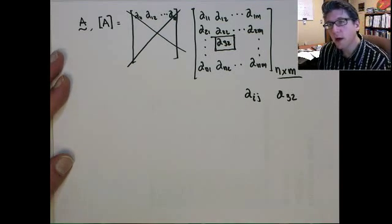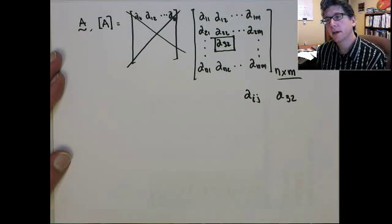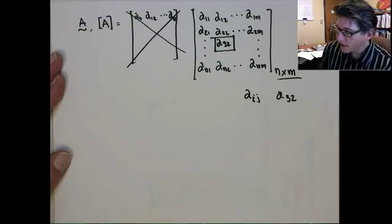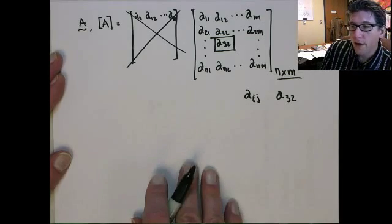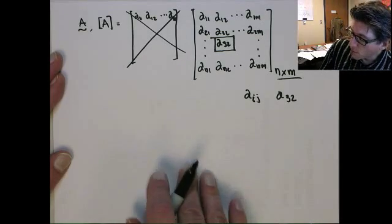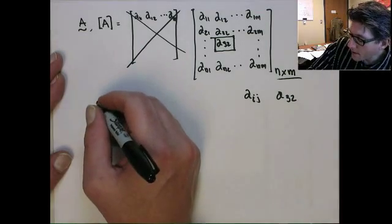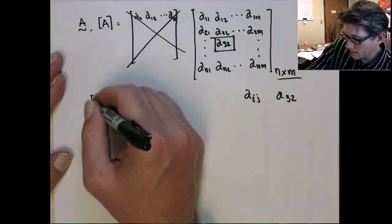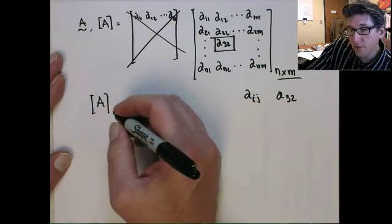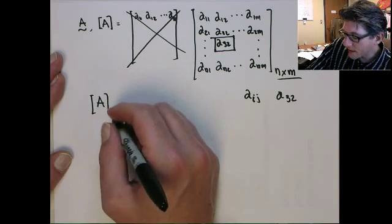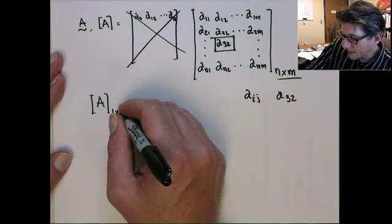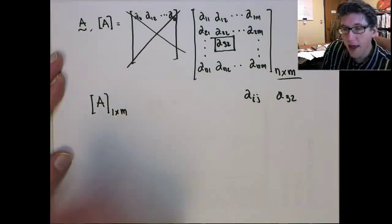Okay, there's two particular cases that I want to talk about for matrices, and these are going to be row and column vectors. So if you have a matrix that's of dimension, let's say, 1 by m...